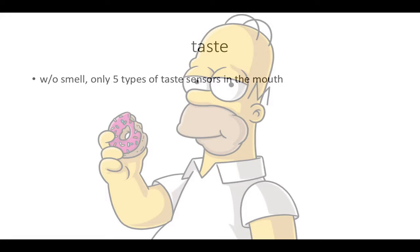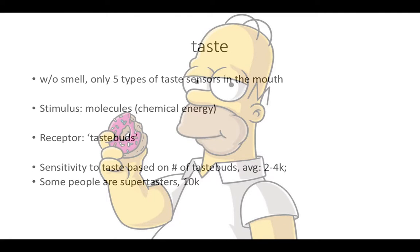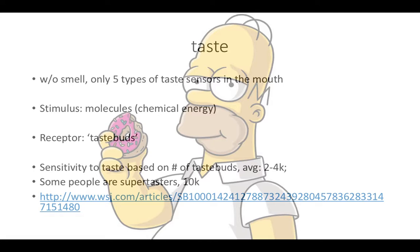Without smell, we only have five types of taste sensors in the mouth. The stimulus is the food molecules that we put in our mouth — they're chemical energy. The receptors are our taste buds. Sensitivity to taste is based on the number of taste buds we have. The average person has somewhere between 2,000 and 4,000 taste buds. Some people are super tasters — they have more than twice that. There's a link to an article about people who taste too much, and they reference Rachel Antonucci in there; she is apparently a super taster, but it's a different Rachel Antonucci.